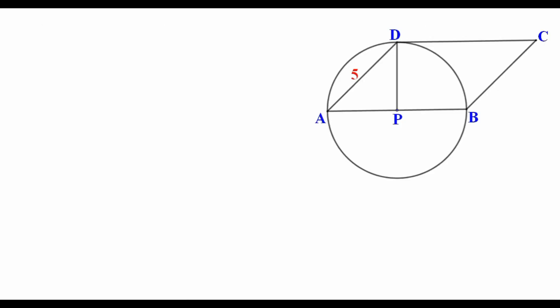Look at the figure. Here AP and PB are radii of the same circle so they are equal. Therefore APB is an isosceles triangle. Two angles are equal and angle P equal to 90 degree. Therefore the remaining angles are 45 degree each. Therefore angle A equal to 45 degree.